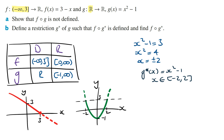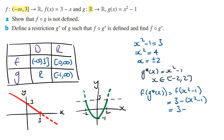Finding the rule of f of g star of x, this is f of x squared minus 1. Wherever there is an x in the function f of x, we replace it with x squared minus 1, giving 3 minus (x squared minus 1). Simplifying, this is 3 minus x squared plus 1, which equals 4 minus x squared. The domain of this composite function is the domain of the inner function, which is from minus 2 to 2.